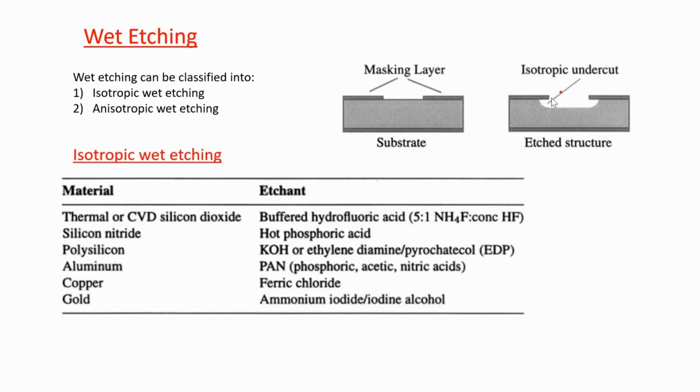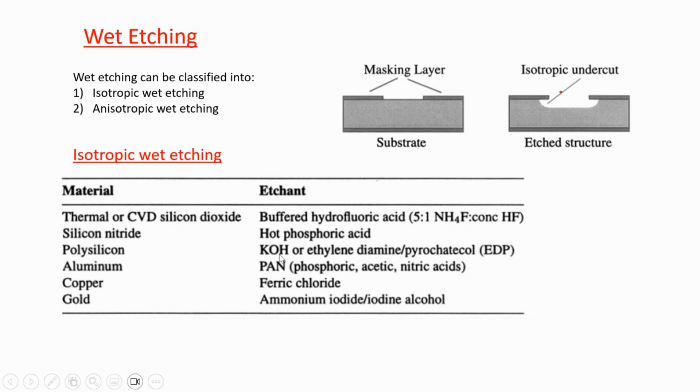These are different materials and their etchants. For example, silicon oxide uses buffered hydrofluoric acid. Silicon nitride requires hot phosphoric acid. For polysilicon, KOH or ethylene diamine pyrocatechol. For aluminum, PAN, which is phosphoric, acetic, nitric acid with distilled water in a particular ratio. For copper, ferric chloride. For gold, iodine alcohol is used.